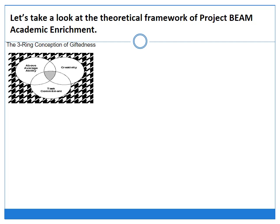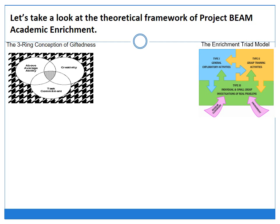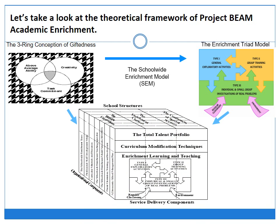The enrichment triad model was implemented in many school districts and states and expanded to the school-wide enrichment model. The school-wide enrichment model gives each school the flexibility to develop unique programs for talent development and creative productivity based on local resources, student demographics, and school dynamics as well as faculty strengths and creativity. This model emphasizes engagement and the use of enjoyable and challenging learning experiences constructed around students' interests, learning styles, and product styles.